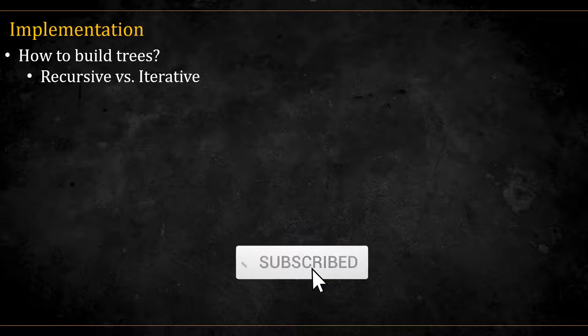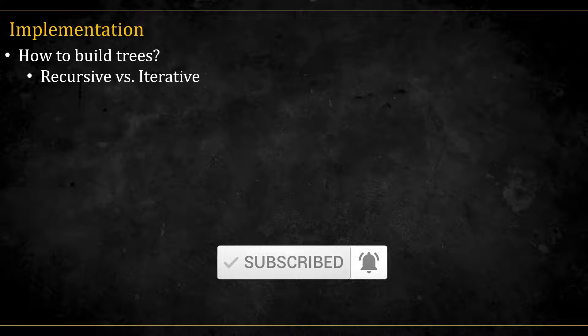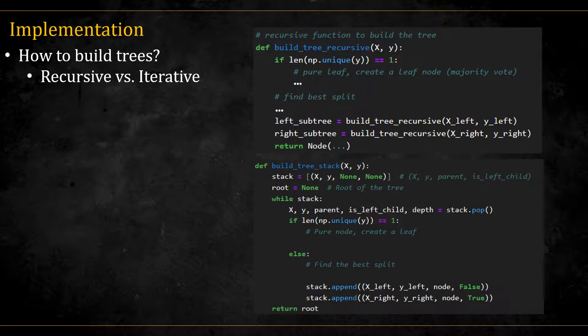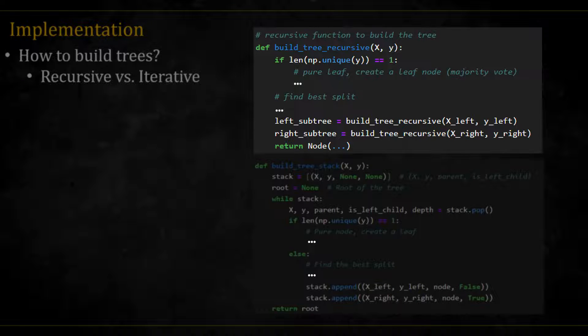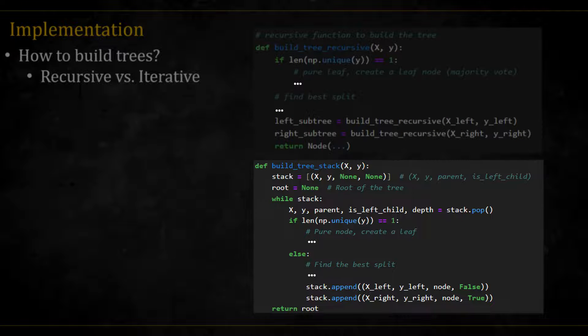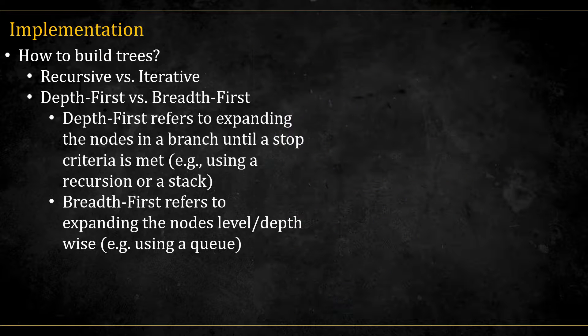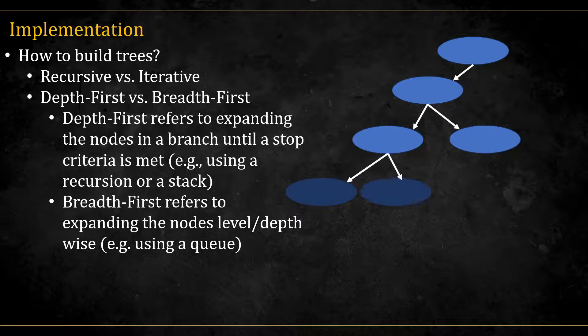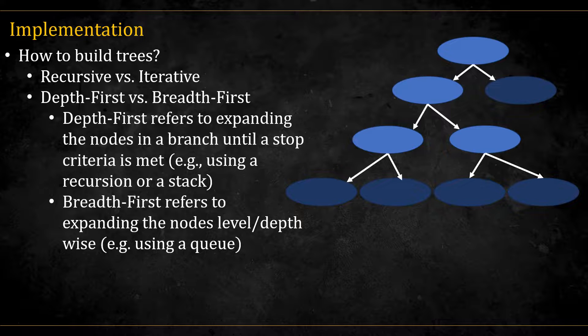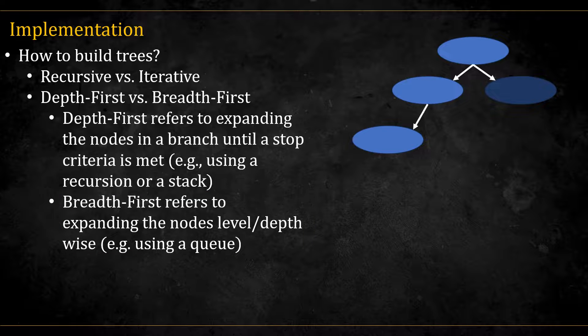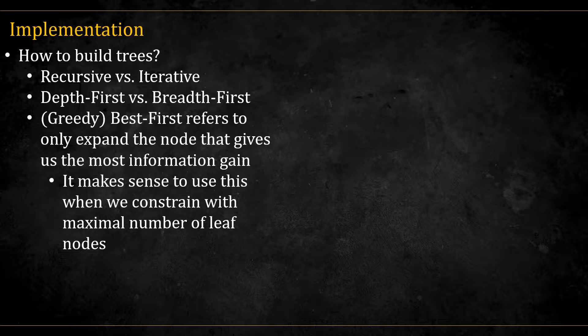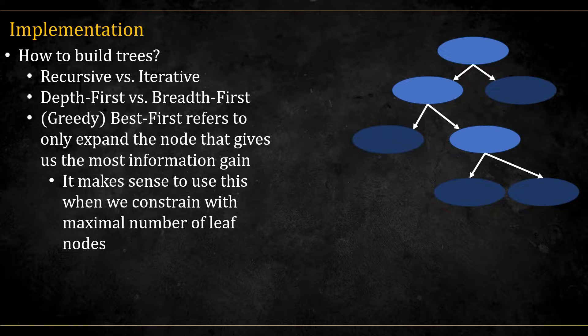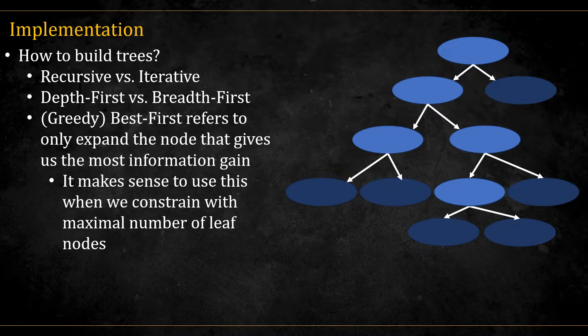Finally, let's talk a bit about implementation. We are building trees here, and there are some tree-related issues. One is whether to use recursion or an iterative method. Recursion can be simpler to read, but is not memory-efficient. Iterative methods require us to keep a data structure like a stack or a queue. There is also the issue of building the tree depth or breadth first. In depth first, we expand the nodes in a branch until we reach the end, and this is what happens if we use recursion or a stack. Breadth first will expand the tree level-wise, and this is what happens if we use a queue. There is also something called best first, which in every step looks for the next best split. Doesn't matter if it's in the current branch or current level, but across the entire tree. These kind of splits make sense when we want to constrain the maximal number of leaf nodes. This is also a bit more complex to implement.